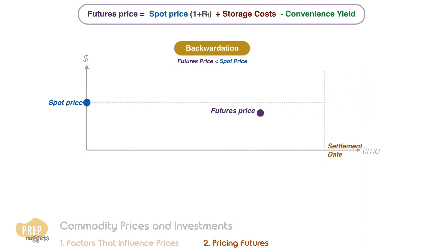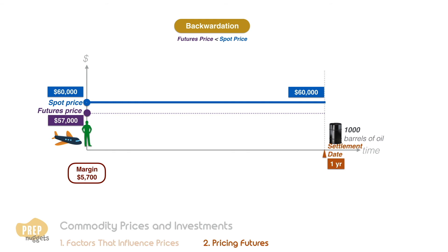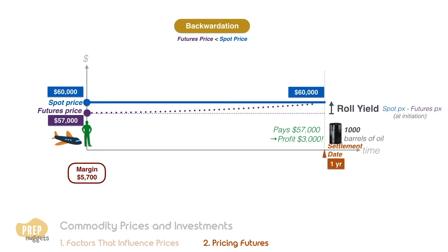Now, let's assume that the airline enters into a futures contract where the futures price is $57,000 to be settled one year later. The airline is required to place a margin of 10% as collateral. Let's assume that at settlement date, the spot price remains constant at $60,000. We can see that the airline actually profits by $3,000 as it is only paying $57,000 for the oil. This is known as the roll yield, which is the difference between the spot price and futures price at initiation. It's called the roll yield because the futures price rolls towards the spot price as the contract gets closer to expiration.